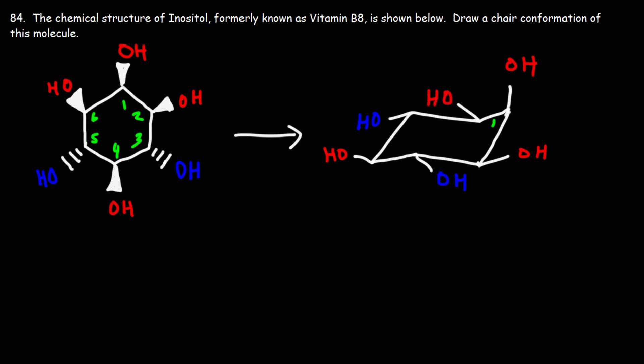So notice that five of the six hydroxyl groups are in the equatorial position, so the chair conformation, this particular chair conformation, is relatively stable. Now if we were to take this OH and put it in this direction, all the other positions would be flipped. We would have five hydroxyl groups in the axial position rather than what we see here, so this particular chair conformation is more stable than the other one that we can draw.